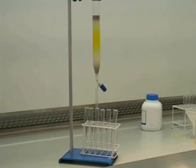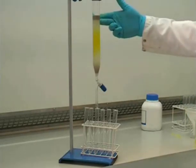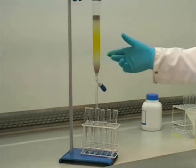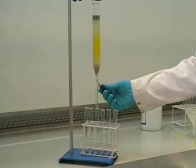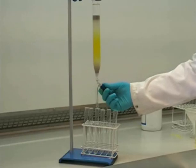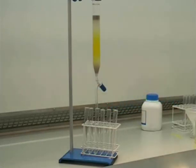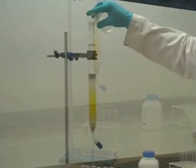Because our compound is coloured in this case, we can actually see it moving down the silica. This will give us a good indication as to when it's actually eluting from the column. In cases where you can't see the compound because of any colour, you can use TLC to analyse the fractions to identify the presence of different compounds.